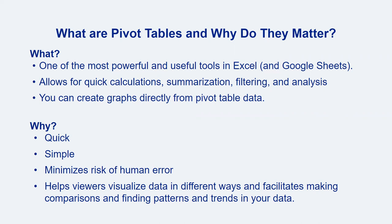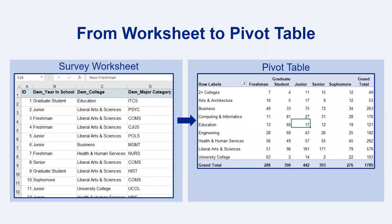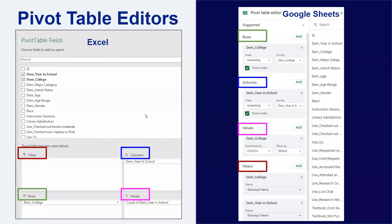Pivot tables allow you to quickly explore your data and facilitate making comparisons and finding patterns or trends. For example, here are two screenshots — on the left is a portion of a survey data set, and on the right is a pivot table that summarizes the number of responses received to the survey in relation to participants' college and year in school. The pivot table editors in Excel and Google Sheets work very much the same, though the layouts are just a bit different.